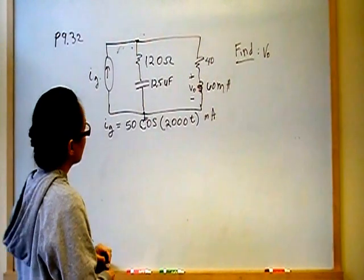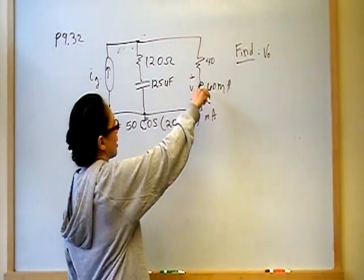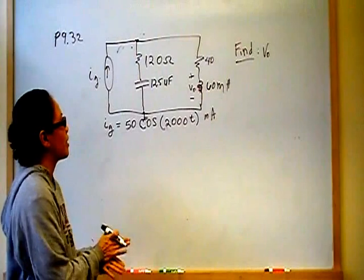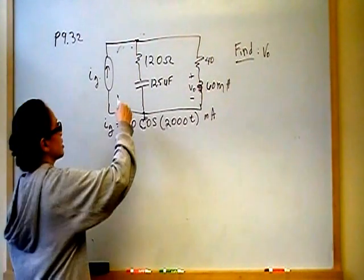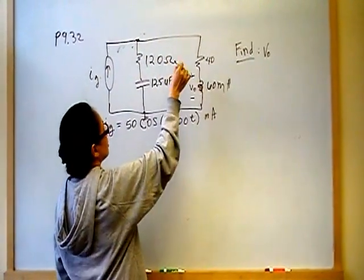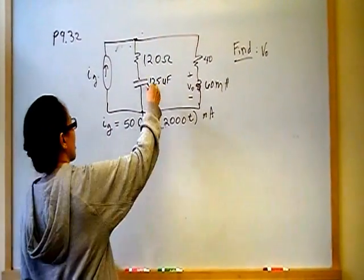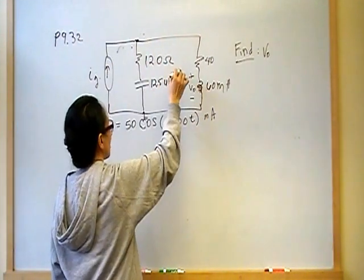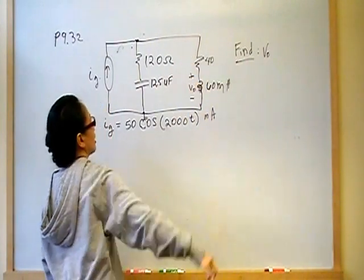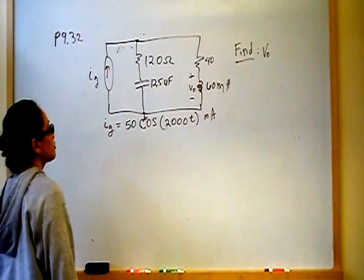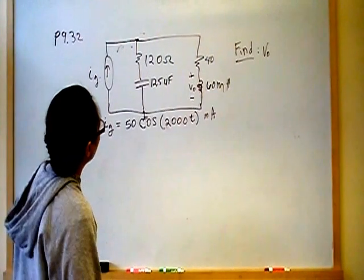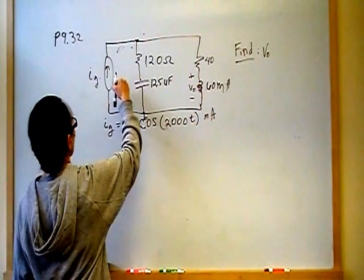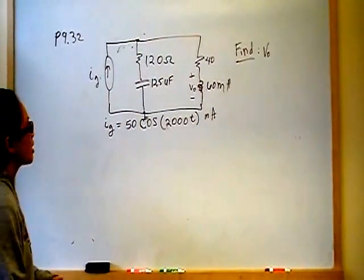We want to find the voltage drop across the inductor. To do that, we're going to use KCL or KVL. KVL doesn't make a whole lot of sense here — we would end up having to use current division to find the current in that branch anyway. Since using current division would automatically give us the voltage drop, KCL is the obvious choice. We have the current in one of the branches, so that's what we'll use.